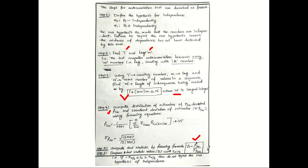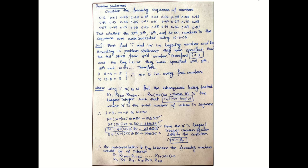We then take a decision: if Z0 is greater than −Z(alpha/2) and less than or equal to Z(alpha/2), we do not reject the null hypothesis of independence, meaning the sequence of random numbers is considered independent.